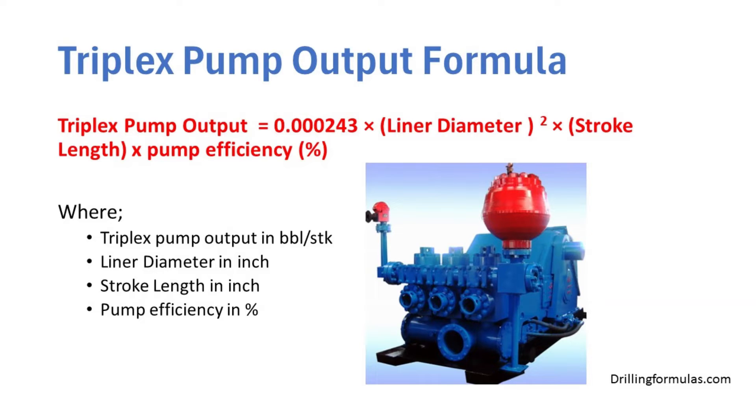Where triplex pump output is in barrel per stroke, liner diameter is in inch, stroke length is in inch, and pump efficiency is in percentage.